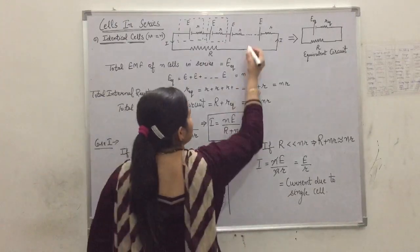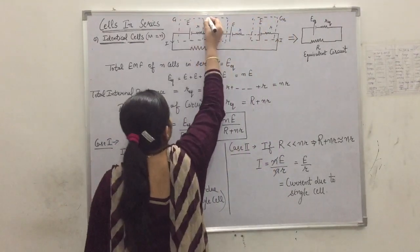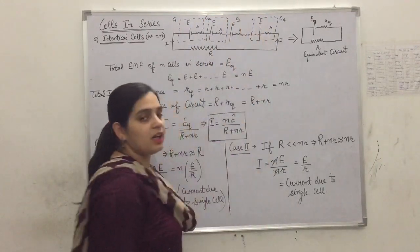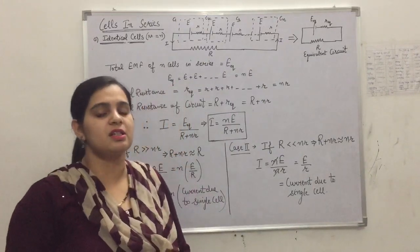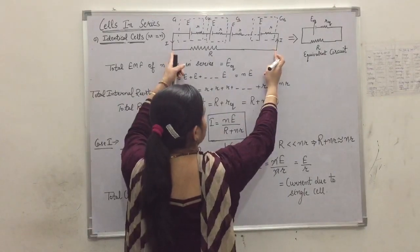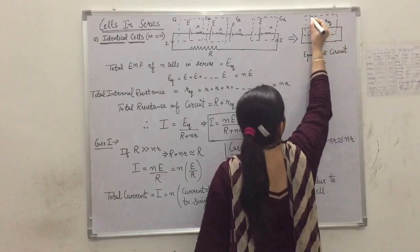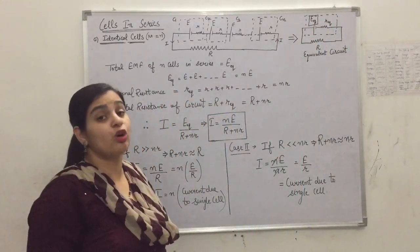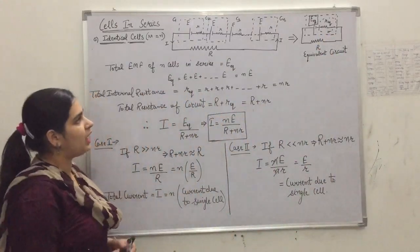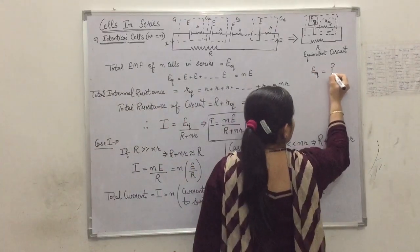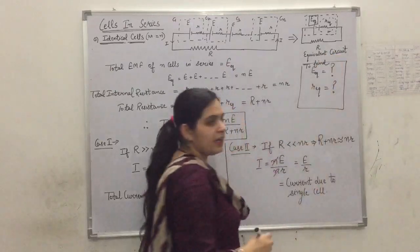So the last cell is Cn. This first cell is C1, second cell C2, third cell C3 and so on up to the last cell Cn. Now we have to solve: if we connect these cells in series, what will be the total EMF of the circuit and what will be the total internal resistance of the circuit? We can consider that if we merge all cells, we create one equivalent cell. Our target is to find the expression for E equivalent and R equivalent.